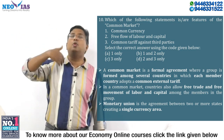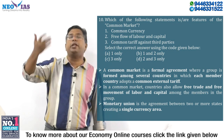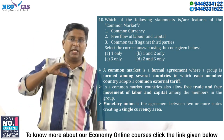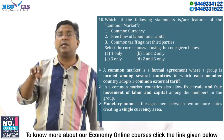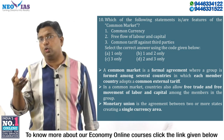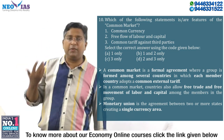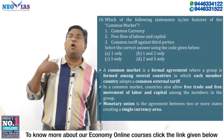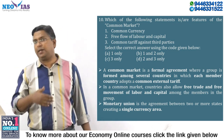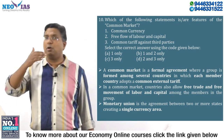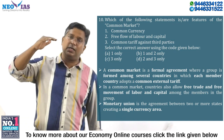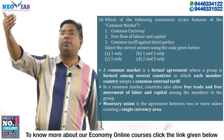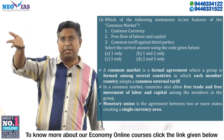Above the common market lies what is called an economic and monetary union. In a monetary union, member countries have a common currency — like the euro in the eurozone or European Union — and they also share a common central bank. The economic and monetary union is a higher level of economic integration above the common market.